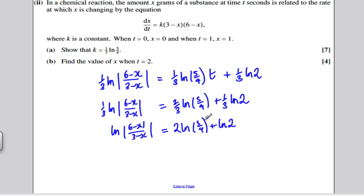I could bring the power of 2 up, actually. It might make things slightly easier. I would get ln((5/4) squared), which is 25/16, plus ln 2. And I could combine these ln by multiplying them, so that's ln(50/16). That's 2 times 25/16. And all of this is equal to ln((6-x)/(3-x)).